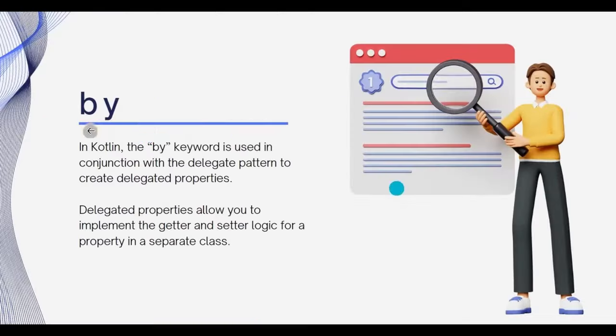You will see when I create the project. Now first let's see what is by. By is not a concept of Jetpack Compose, instead it's a concept of Kotlin. By is a keyword that is used with the delegate pattern to create delegated properties. Delegated properties allow you to implement the getter and setter logic for a property in a separate class. Delegation will help you to write more concise and reusable code. It's a good alternative to inheritance.